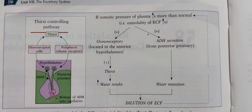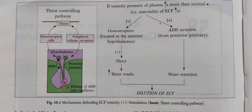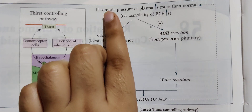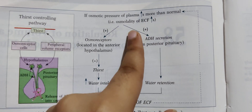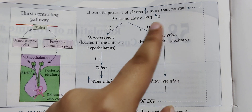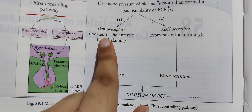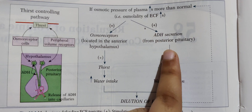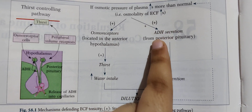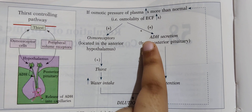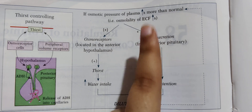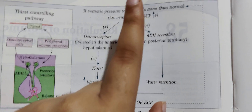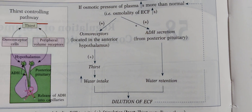Let's start with the regulation of volume and concentration of body fluids. First, we will see the mechanism defending ECF tonicity. If osmotic pressure of the plasma increases — that means if the osmolality of the ECF increases — it will stimulate the osmoreceptors located in the anterior hypothalamus and will also increase ADH secretion from the posterior pituitary. ADH, or anti-diuretic hormone, prevents diuresis — it prevents loss of water from the body — because osmolality has increased and we need more water to decrease osmolality.